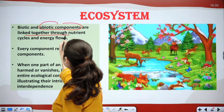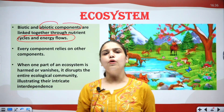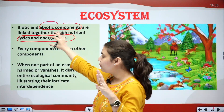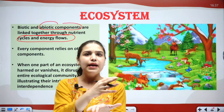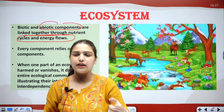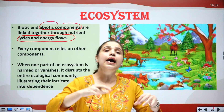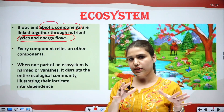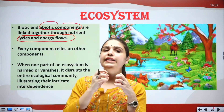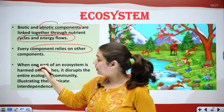Biotic and abiotic components are linked together through various nutrient cycles and energy flows. We are all interlinked and interdependent. Producers can make their own food; consumers are dependent on producers — they may eat plants or other animals. This is the nutrient flow — how they get their food from different sources — and there is energy flow as well, through which they are all linked.